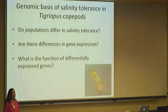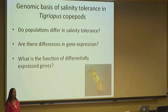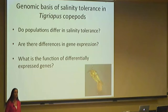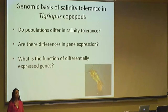The three more specific questions I'm looking at in my research are: How do populations differ in salinity tolerance? Are there differences in gene expression among populations? And if there are differentially expressed genes, what is the function of those genes?